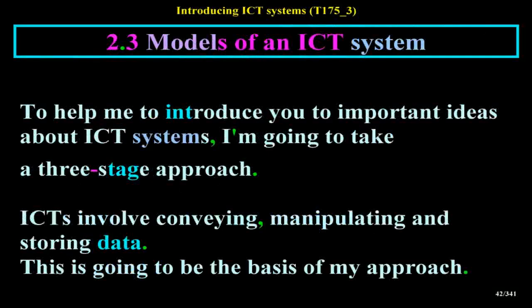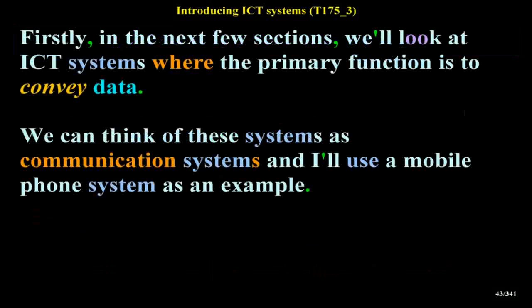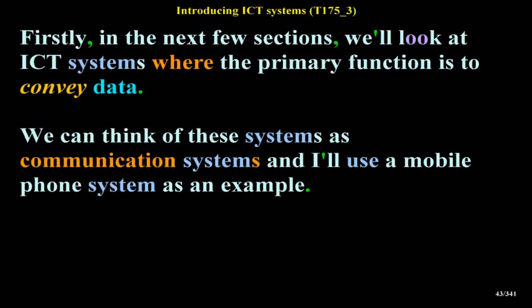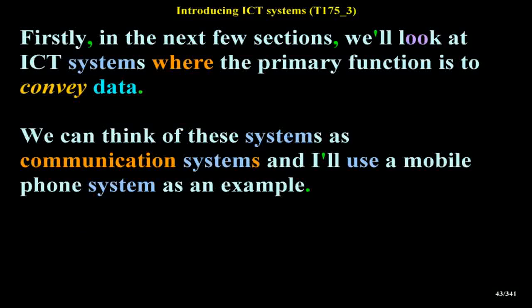Three models of an ICT system. To help introduce you to important ideas about ICT systems, I'm going to take a three-stage approach involving conveying, manipulating and storing data. Firstly, in the next few sections, we'll look at ICT systems where the primary function is to convey data — we can think of these as communication systems, and I'll use a mobile phone system as an example.